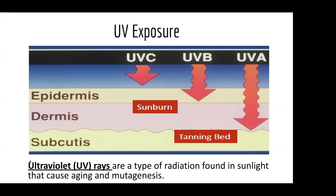UV radiation is composed of three types: UVC, UVB, and UVA. They penetrate our bodies differently. UVC rays are larger and don't actually get into our skin — we don't worry about them. UVB rays get through the top layer of skin, are associated with sunburns, and are most associated with melanoma and most skin cancers.